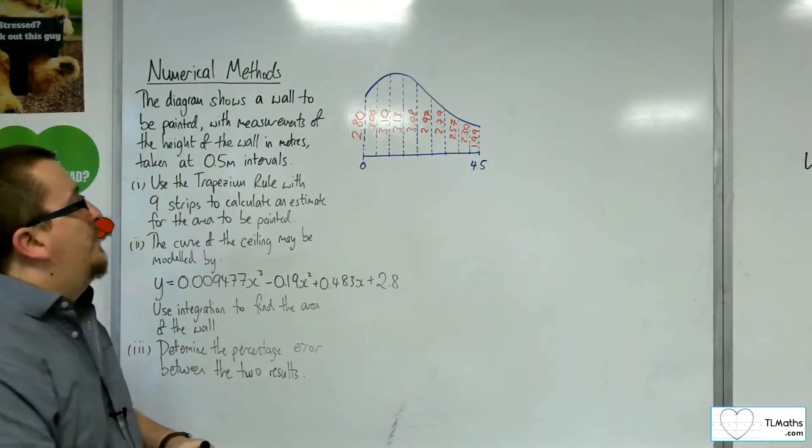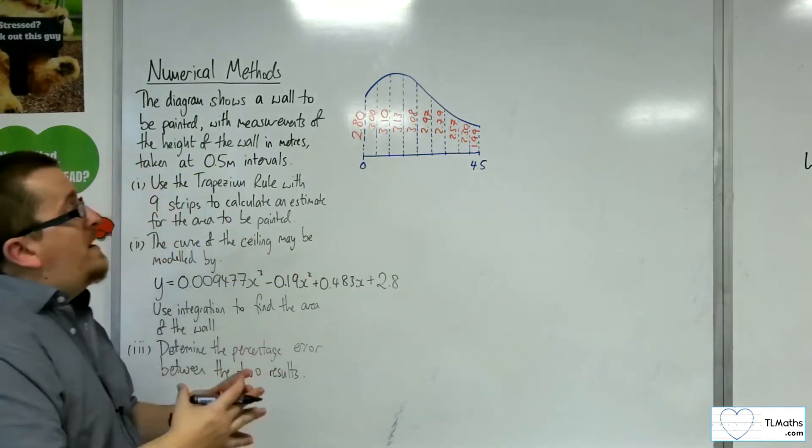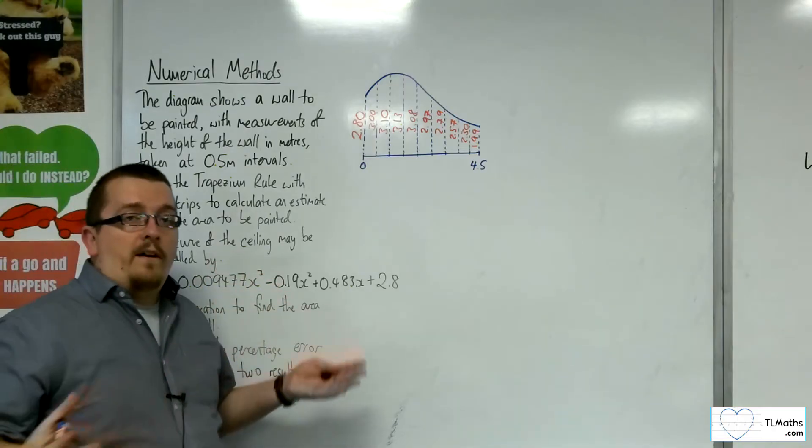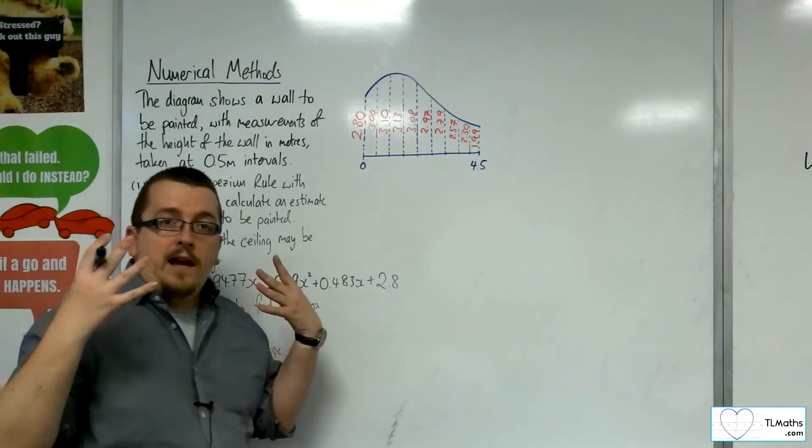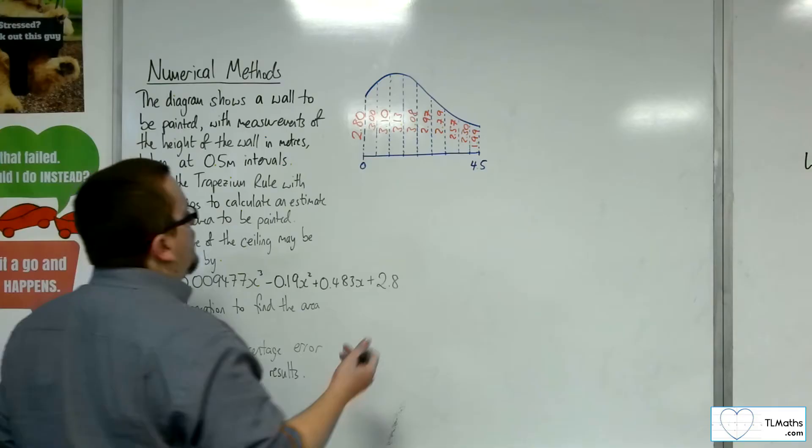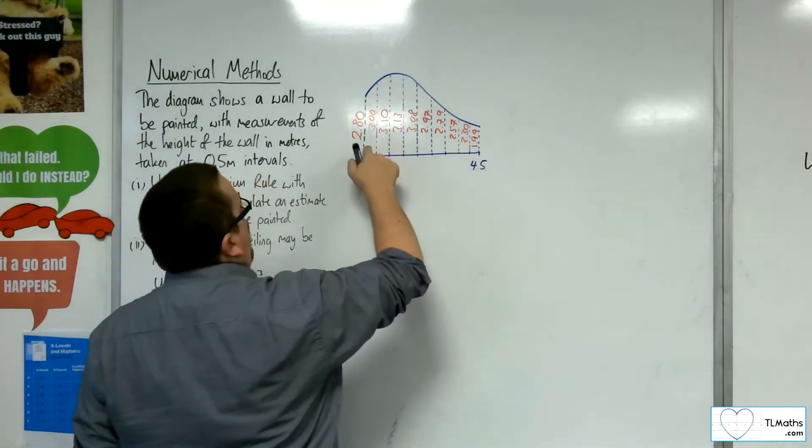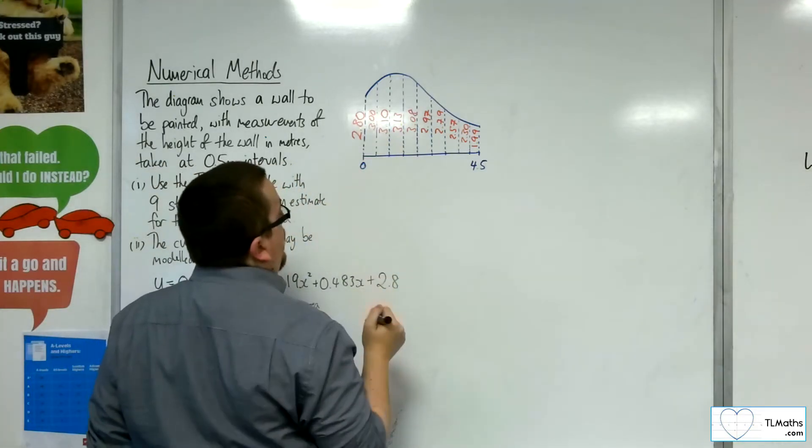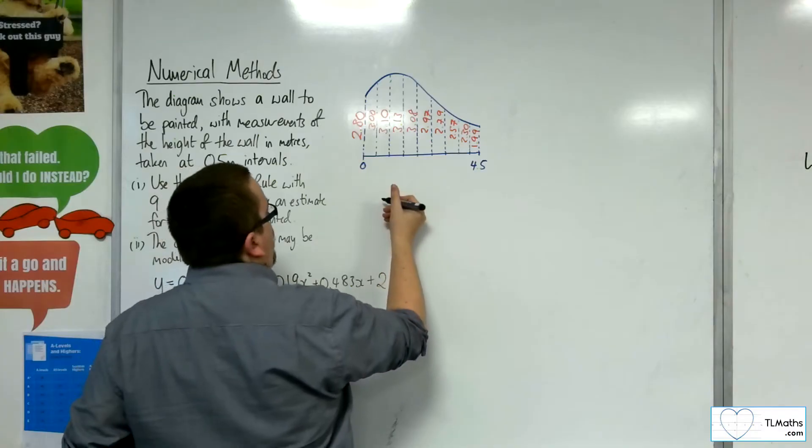We need to use the trapezium rule to do that. Thankfully, we've already got all of the heights of the strips, so we've got the height on either side for each of them. This should be quite straightforward.